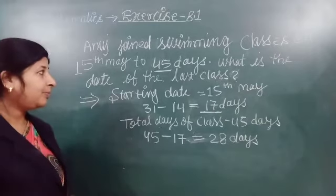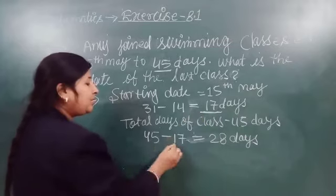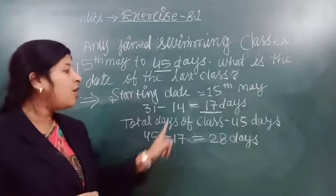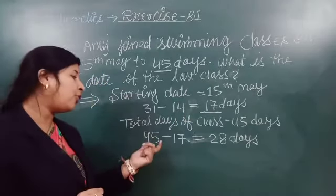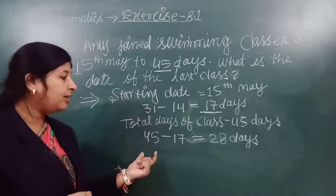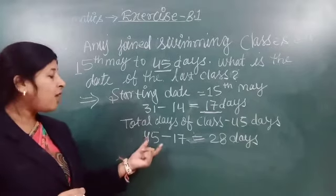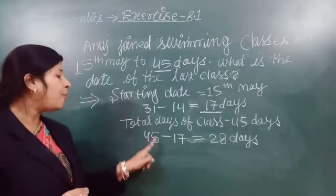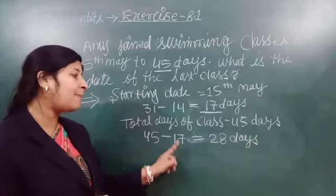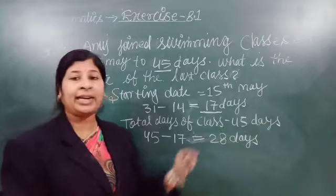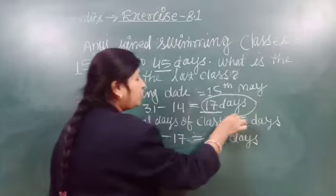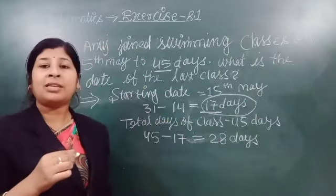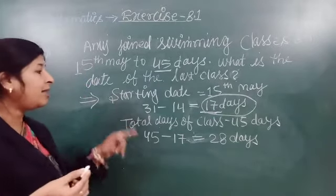So how will it work? 45 minus 17. He has already attended 17 days of class in May. He has to attend 45 days total, and he has already attended 17 days. So we can reduce 17 from 45 — yes, of course we can, because we need to find the last date. So when we reduce 17 from 45, our answer will be 28 days. So in May, he attended 17 days of class, and after 17 days, May month is over. Which month comes after May? June.